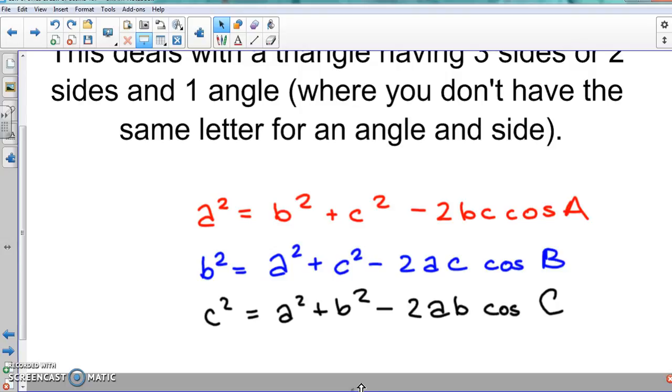So if you're looking for side a, but they gave you side b and c and angle A, that means you're going to use this first one right here, because that's side b, side c, and angle A. So if they gave that to you, then that means you can find side a.